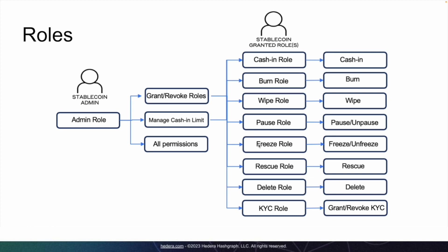The freeze role allows the user to freeze a particular account. Once an account is frozen, the account owner cannot transfer or receive the stablecoin until the account is unfrozen. The rescue role enables the user to transfer a token or HBAR from the treasury account. The treasury account is normally the smart contract used to manage the roles.